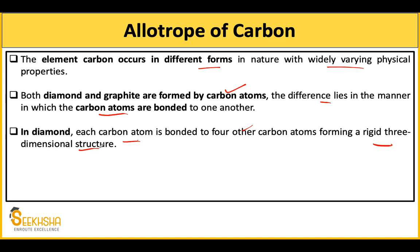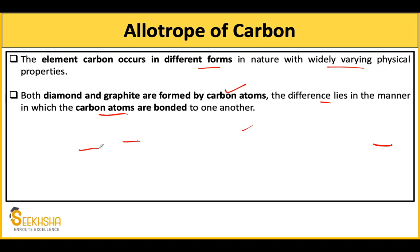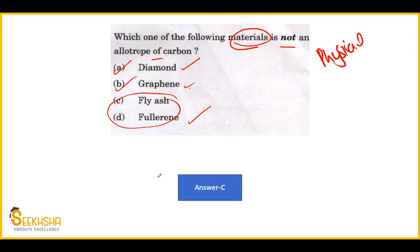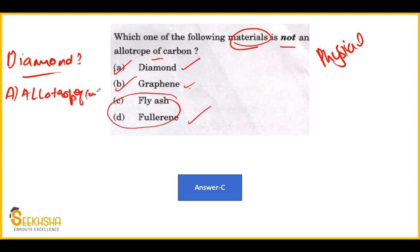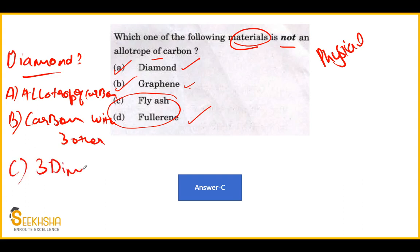This structural knowledge is important because statement-based questions can be formed from it. For example, a question could be: 'Which of the following is a property of diamond?' One statement could say it is an allotrope of carbon. Another could say every carbon atom is bonded with four other carbon atoms. A third could say it forms a three-dimensional structure. A fourth statement could say synthetic carbon is completely different from natural carbon.